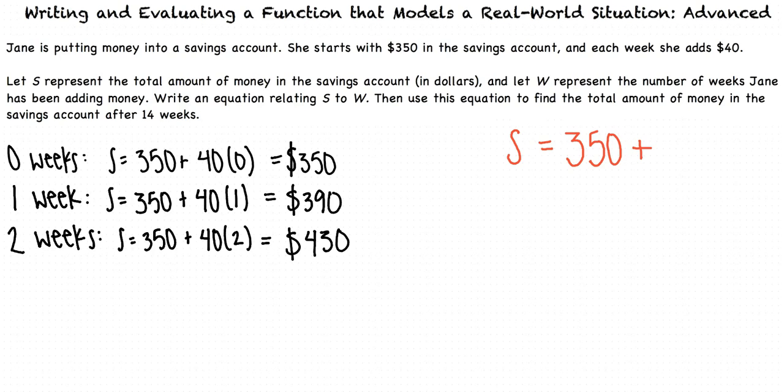After five weeks, the total amount of money will be S equals 350 plus 40 times five, because she will have put five weekly deposits of $40 in, and this equals 550.